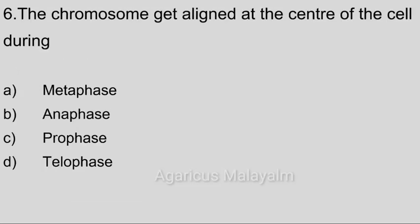Sixth question. The chromosome get aligned at the center of the cell during. Answer options. Option A: metaphase. Option B: anaphase. Option C: prophase. Option D: telophase. Correct answer: Option A, metaphase.